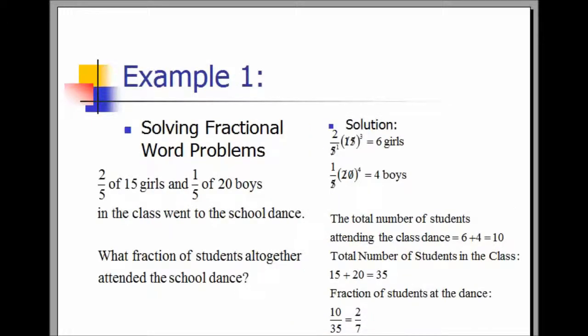Example one: solving fractional word problems. Two-fifths of 15 girls and one-fifth of 20 boys in the class went to the school dance. What fraction of the students altogether attended the school dance? This is a multi-step word problem. Your first step is to find the number of girls and the number of boys who went to the school dance.